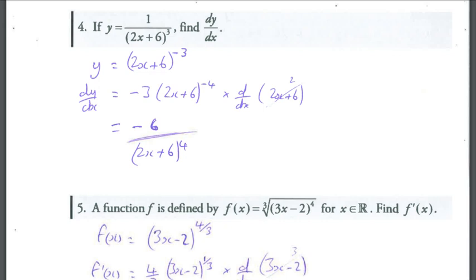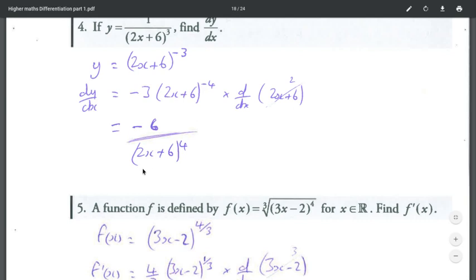Multiply that by negative 3, so it'll be negative 6 bracket to the negative 4. And if it's bracket to the negative 4, we can just move that down to the denominator. So negative 6 over 2x plus 6 all to the power 4.